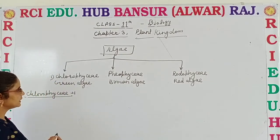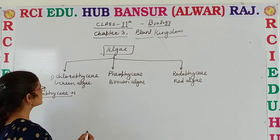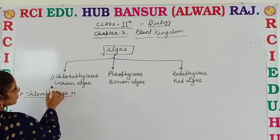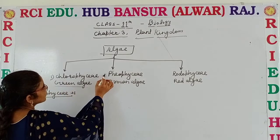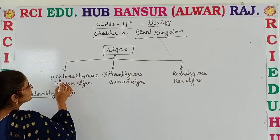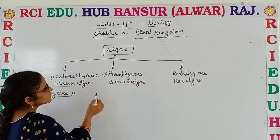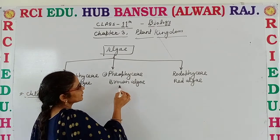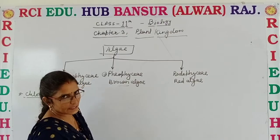The algae are divided into three classes: Chlorophyceae, which are known as the green algae; second, Phaeophyceae, the brown algae; and third, Rhodophyceae, the red algae.